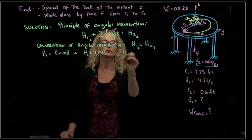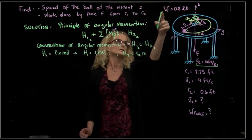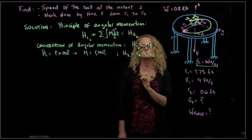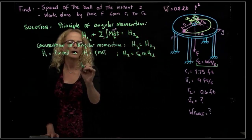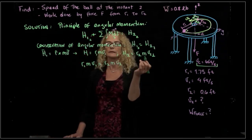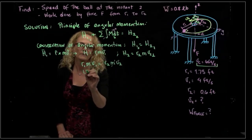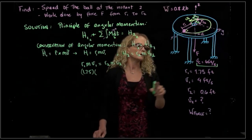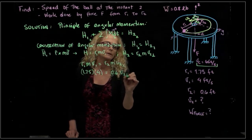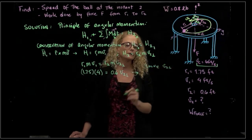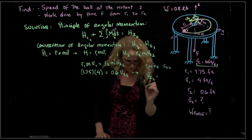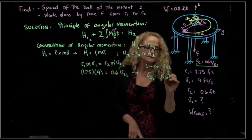So H2 equals R2 times mass times the perpendicular component of velocity. Setting H1 equal to H2 and canceling mass: R1 times V1_perpendicular equals R2 times V2_perpendicular. Substituting R1 = 1.75, V1 = 4, and R2 = 0.6, we solve for the perpendicular velocity component and get V2_perpendicular equals 11.67 feet per second.